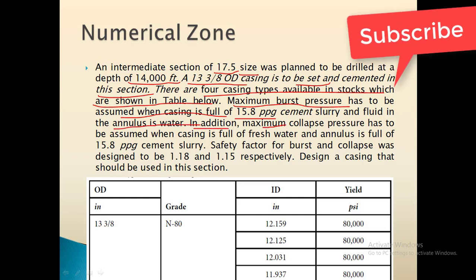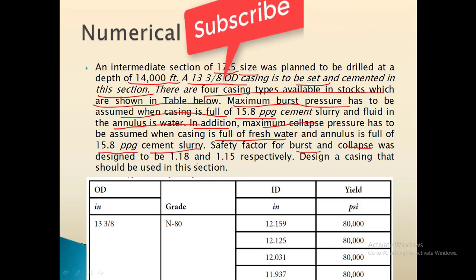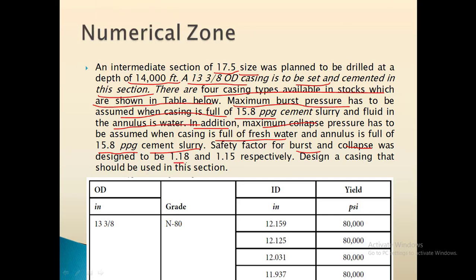In addition, the maximum collapse pressure has to be assumed when the casing is full of water and the annulus is full of 15.8 ppg cement slurry. The safety factor for burst and collapse pressure was designed to be 1.18 and 1.5 respectively.